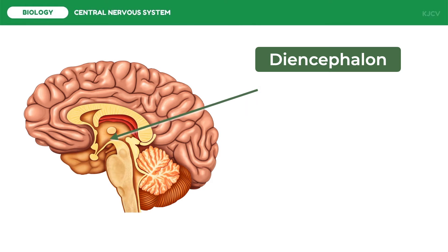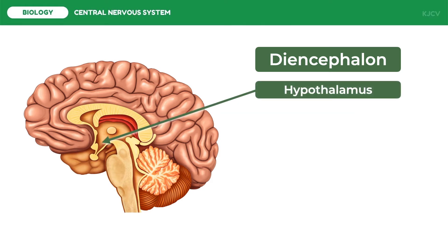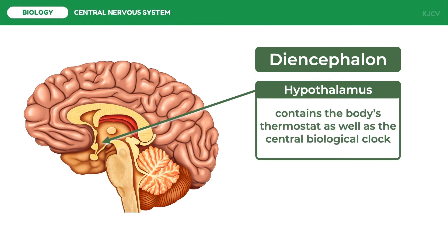The thalamus is formed by two masses, each roughly the size and shape of a walnut. The second part of the diencephalon is the hypothalamus — the prefix 'hypo' means under, so the hypothalamus is situated below the thalamus. It is a much smaller structure that contains the body's thermostat and the central biological clock. Through its control of the pituitary gland, the hypothalamus regulates hunger and thirst, plays a role in sexual and mating behaviors, and controls the fight-or-flight response.